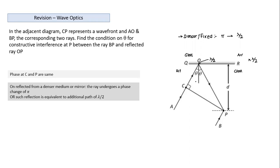These are points we need to keep in mind about what happens to phase and path length when reflection takes place from a denser or rarer medium or mirror.